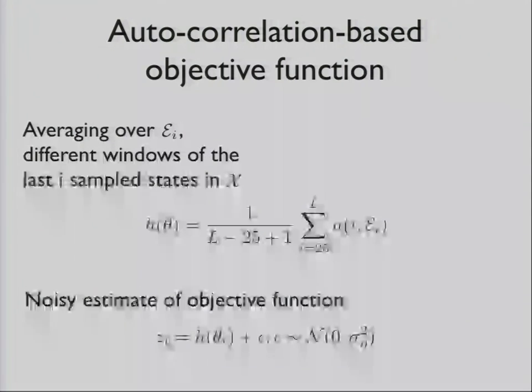We draw samples, and we essentially get a noisy estimate of this. Since we're using a Gaussian process, we end up with a noise model, which is zero mean Gaussian same variance across the board.